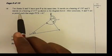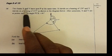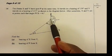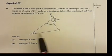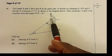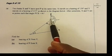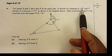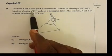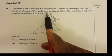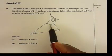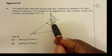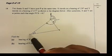Here is an exam question: two boats X and Y left port P at the same time. X travels on a bearing of 159 and Y travels on a bearing of 215, as shown in the diagram below.